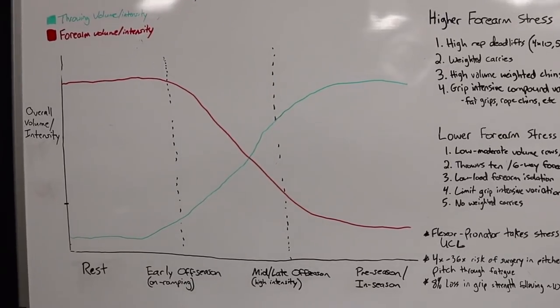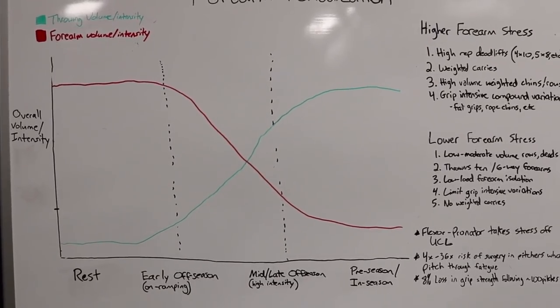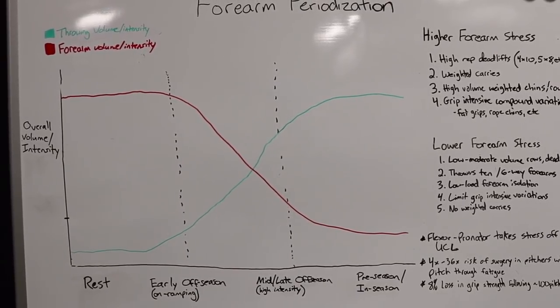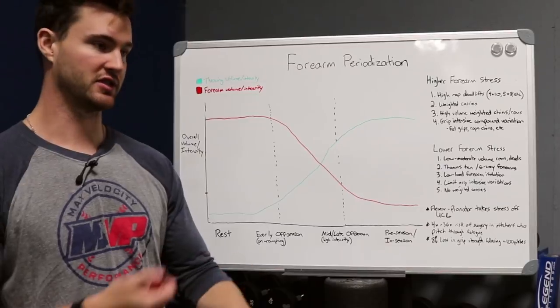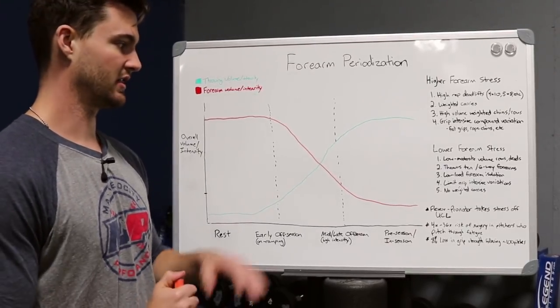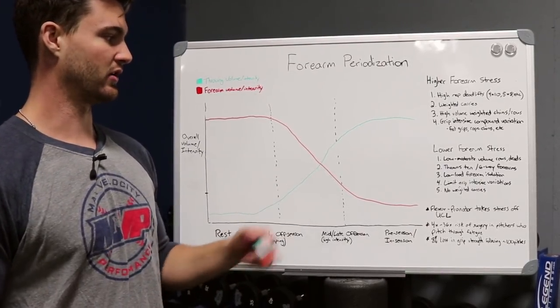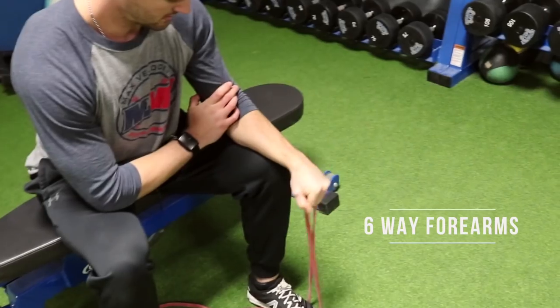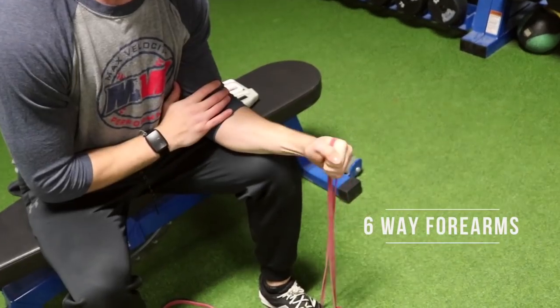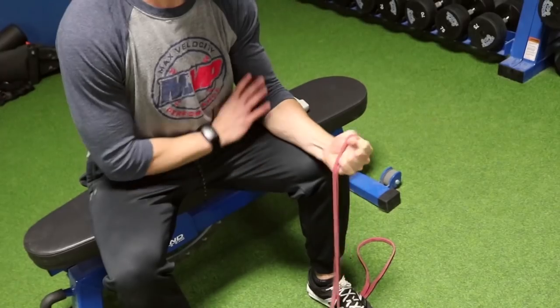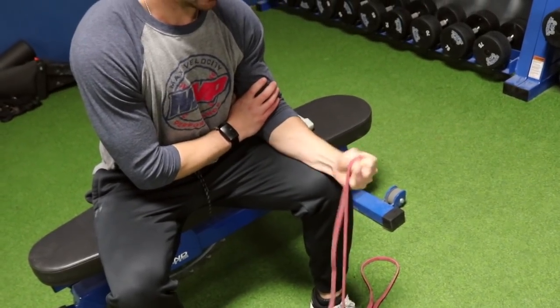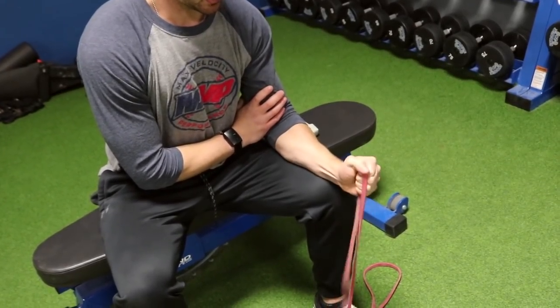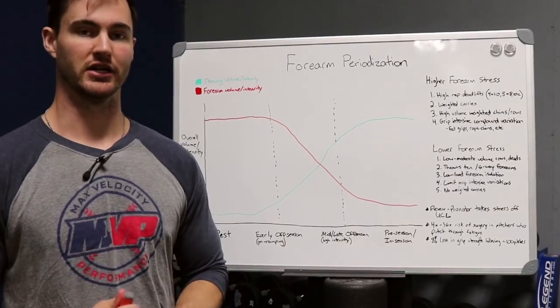As far as the less forearm intensive variations that you can do at other parts in the off-season and in-season, we're looking at low to moderate volume rows and deadlifts, things like three sets of three, three sets of eight, four sets of six, things like that. Lower load forearm isolation. This includes things like throwers' ten, six-way forearms, where it's using lighter weight and it's more of a blood flow type recovery modality. Limiting grip intensive variations.